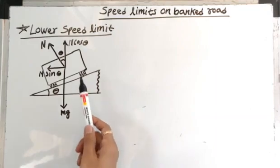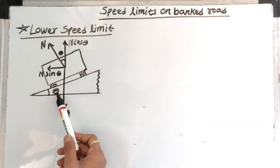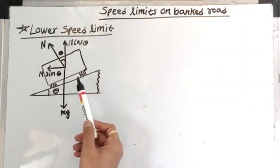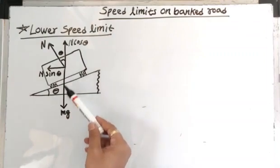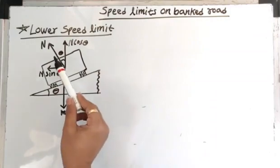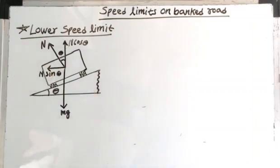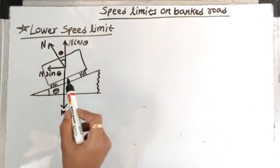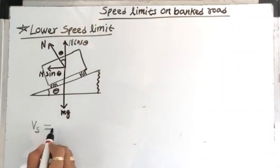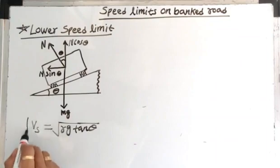As we studied earlier, this figure shows the vertical section of a vehicle moving along a curved banked road. The road is banked at angle theta, and the mass of the vehicle is M, moving along a curved banked road of radius R. The forces acting are: weight Mg acting vertically downward, and normal reaction N perpendicular to the banked road, which resolves into vertical component N cos theta and horizontal component N sin theta. The most safe speed Vs equals root Rg tan theta, as derived earlier.